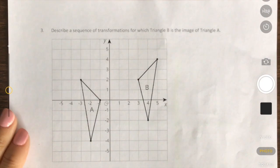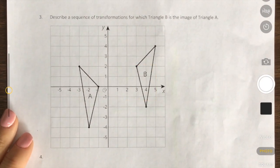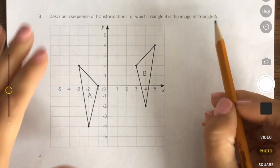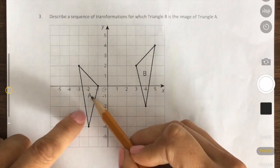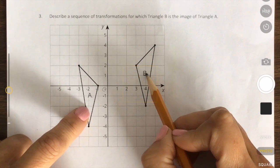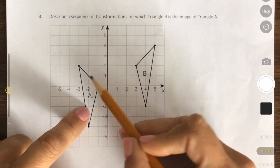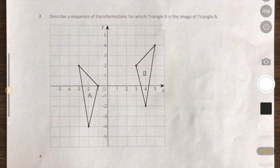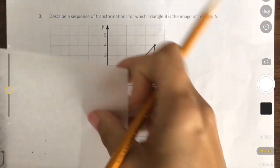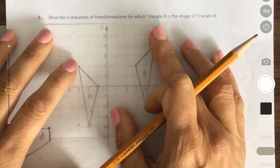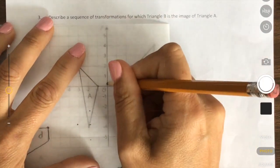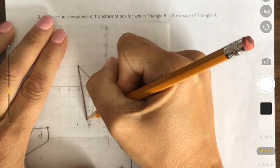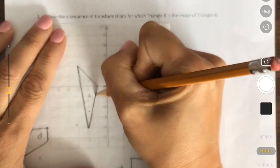This time we're going to describe a sequence of transformations for which triangle B is the image of triangle A. So this is our pre-image and B is our image that we created. So we changed from A and we went to B. So how did we do that? So again, we're going to use our patty paper to help us. I'm going to draw our little orientation line here just to give us. We may or may not need it.